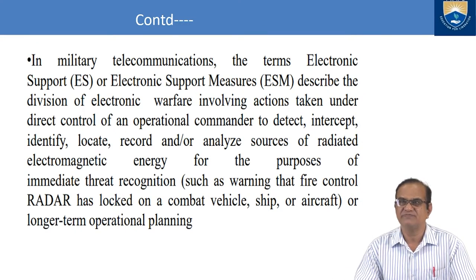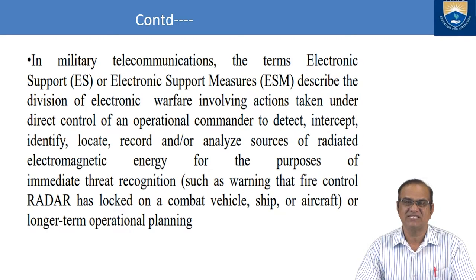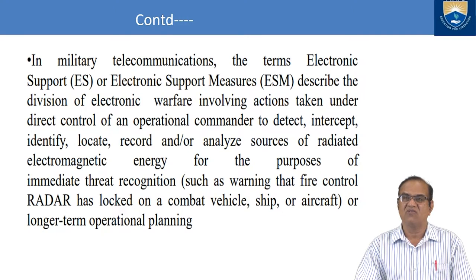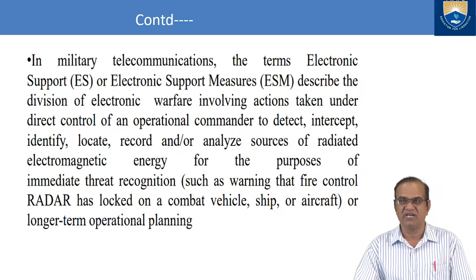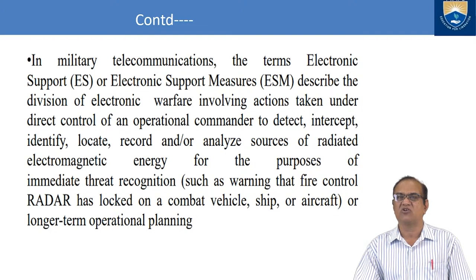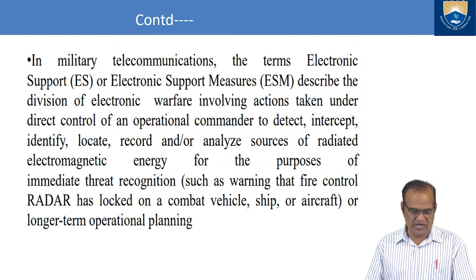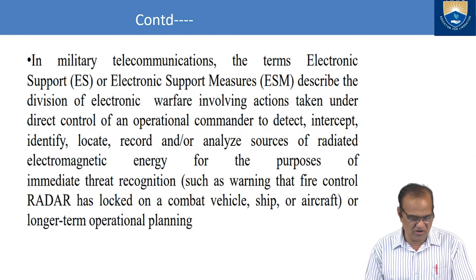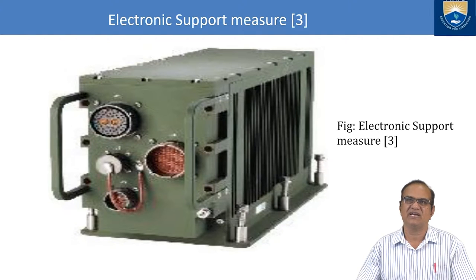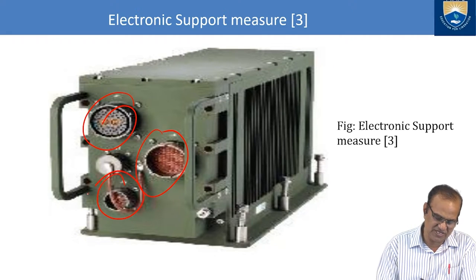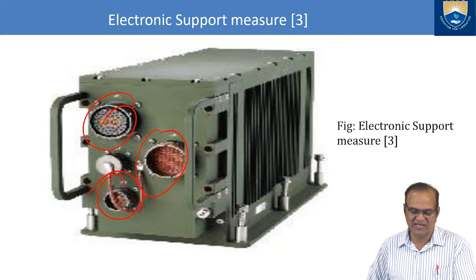In military telecommunications, Electronic Support Measures (ESM) describes the division of electronic warfare involving actions taken under direct control of an operational commander to detect, intercept, identify, locate, record, and analyze sources of radiated electromagnetic energy. This is used for immediate threat recognition — such as warning that a fire control radar has locked onto a vehicle, ship, or aircraft — or for longer-term operational planning. ESM devices include computers and cables attached in a specific way.